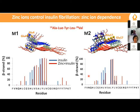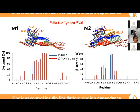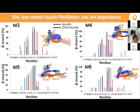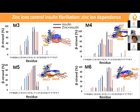When zinc binds to chain B, we found that zinc ions control insulin fibrillation depending on the specific binding site. If zinc binds to histidine 5, it induces insulin fibrillation. Binding to glutamic 13 and glutamic 21 shows a slight induction of fibrillation. However, when it binds to histidine 10, we do not see much difference. The effect is entirely dependent on the specific binding site.